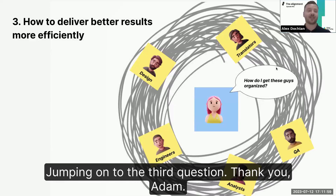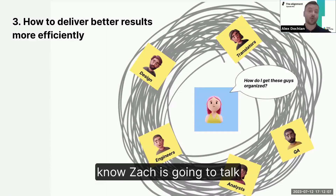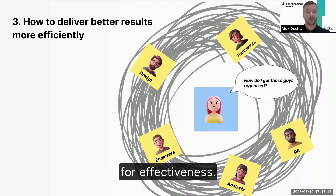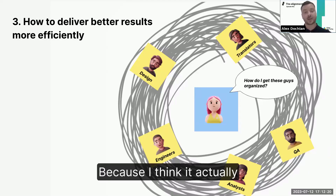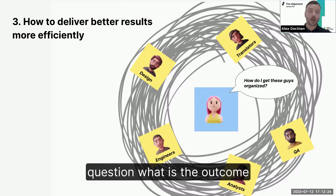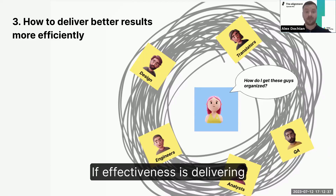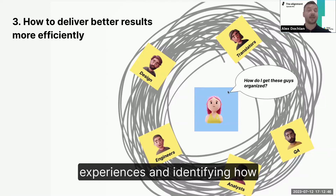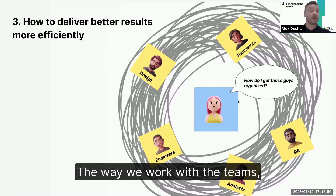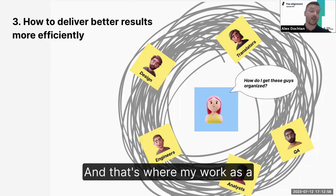Jumping to the third question, which I'm going to pose rather than answer, because I know Zach is going to talk about this — which is the question of effectiveness. What does effectiveness mean? Because I think it takes us back to that primary question: what is the outcome we're going for? Is effectiveness delivering a list of actions, or are we talking about squeezing suppliers, doing more automation, doing more with less? If effectiveness is delivering a metric, then we're talking about greater clarity on local users and their experiences, and identifying how to grow where you are. That's where my work as a localization project manager is headed.